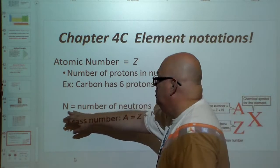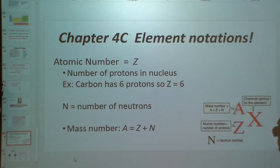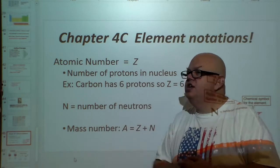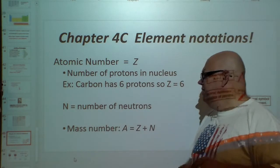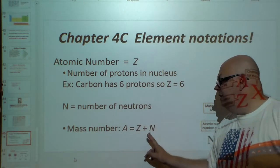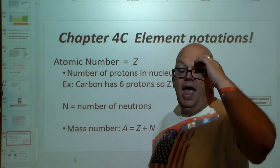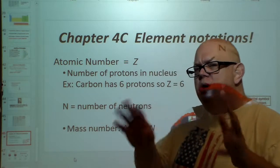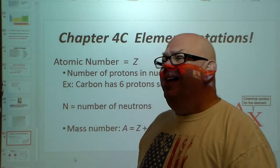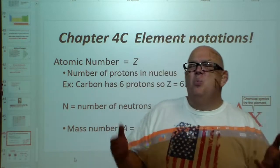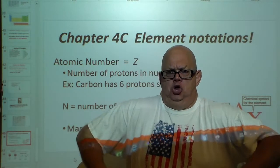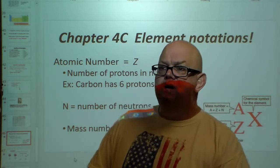There is also the N number, which is the number of neutrons. Sometimes there's a variation in the number of neutrons — we'll get to that a little later. The mass number is A, and A equals Z plus N — the number of protons and the number of neutrons added together. Do we worry about electrons for mass number? No. They're so tiny they weigh next to nothing. A proton and a neutron are massive compared to an electron, so we don't have to deal with that.